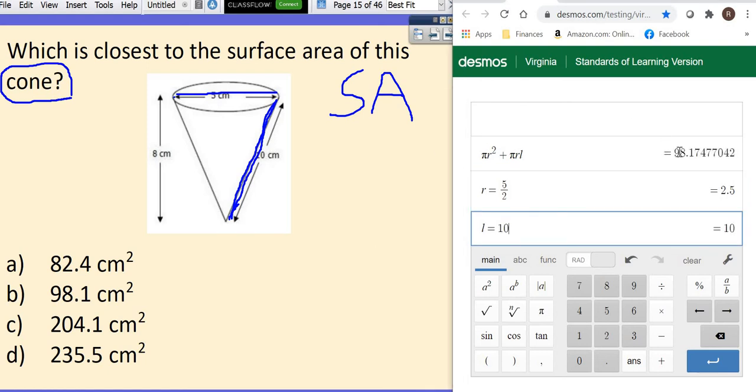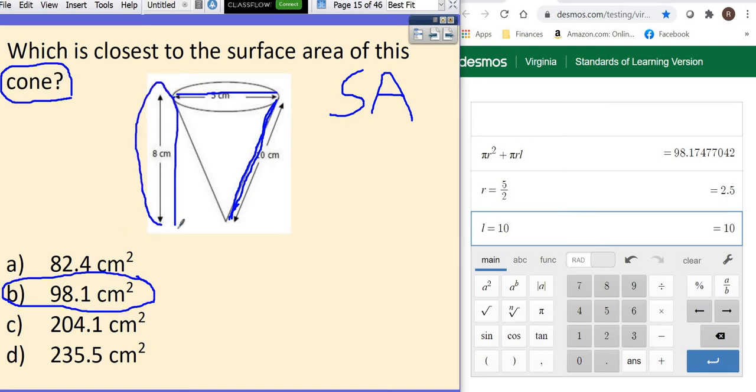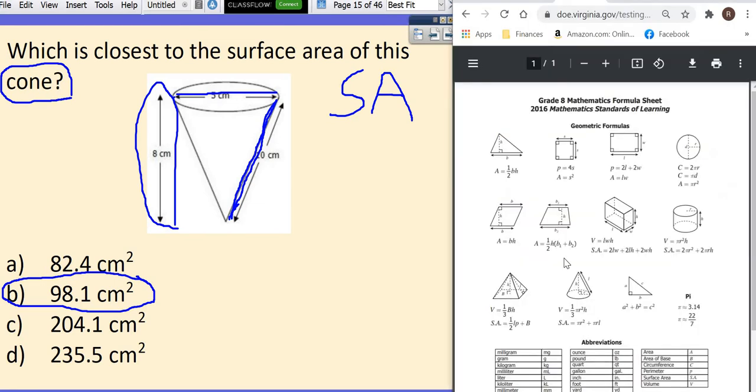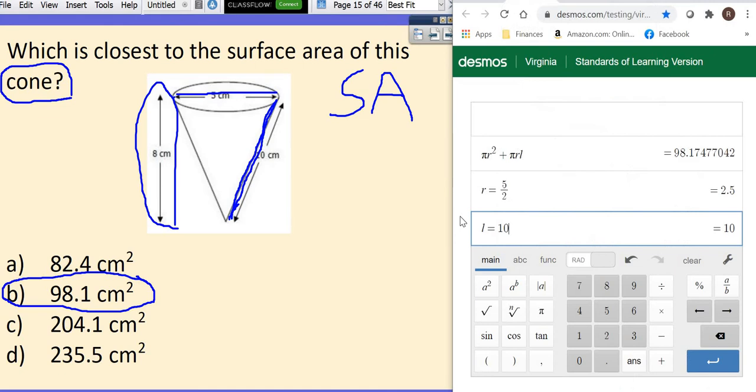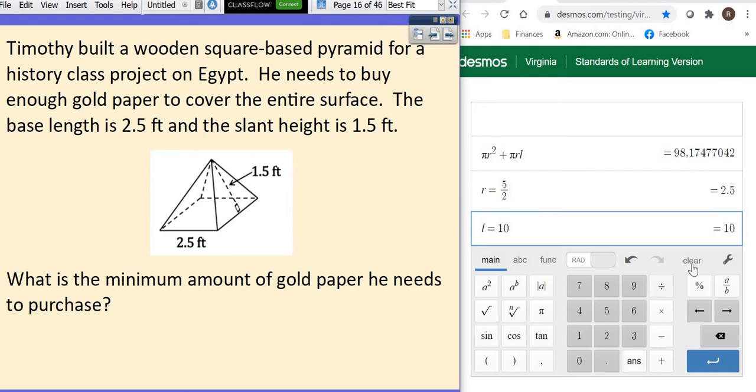So that means my surface area is 98.2. There was a little bit of a rounding error here, but this would be my answer right there. That's my surface area. This height, that would be H, but there's no H in the surface area formula. The H is in your volume formula. So sometimes they will give you extra information. Use the pictures on your formula sheet to help you.